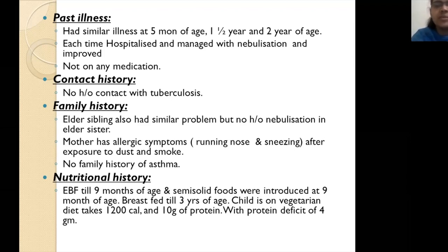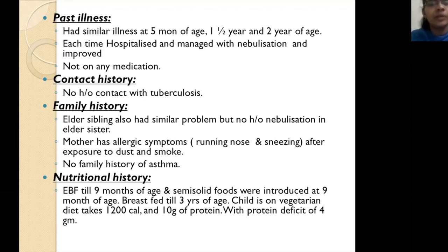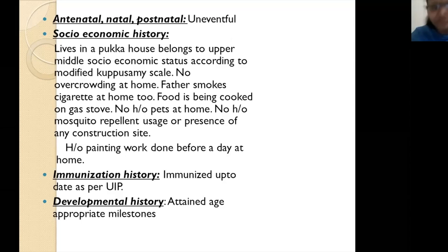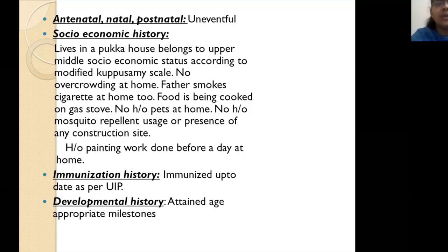Nutritional history: the child was exclusively breastfed till nine months, semi-solids introduced at nine months, and breastfed till three years. The child is on a vegetarian diet, taking 1200 kilocalories and 10 grams of protein — calorie intake is adequate but there is some protein deficit. Antenatal, natal, and postnatal history is uneventful; birth weight and mode of delivery are sufficient to mention. In this respiratory case, socioeconomic history is particularly important.